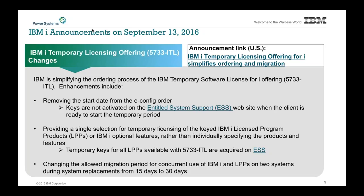Changes are going on to the temporary licensing offering — basically a temporary keys simplification where you no longer have to specify individual products. You can just get a temporary key for all LPPs available under your 5733-ITL. The migration period has been upped from 15 days to 30 days, and we've changed the way keys are activated, all targeted at making it easier when you're doing upgrades.